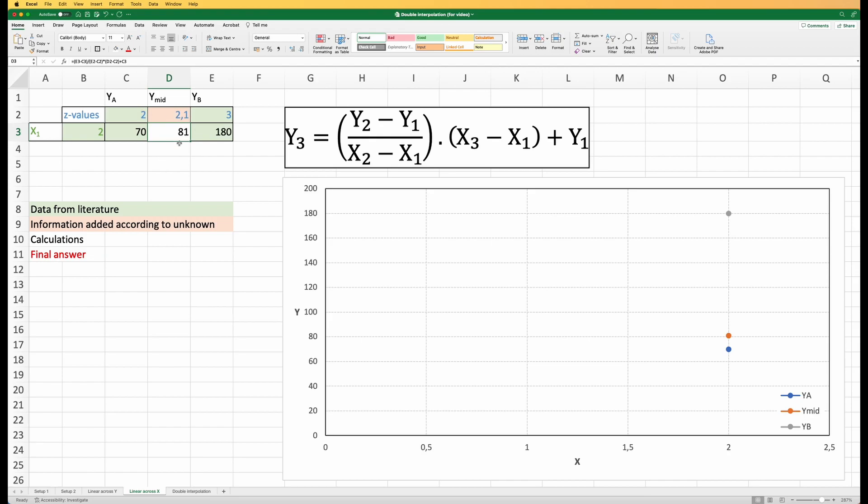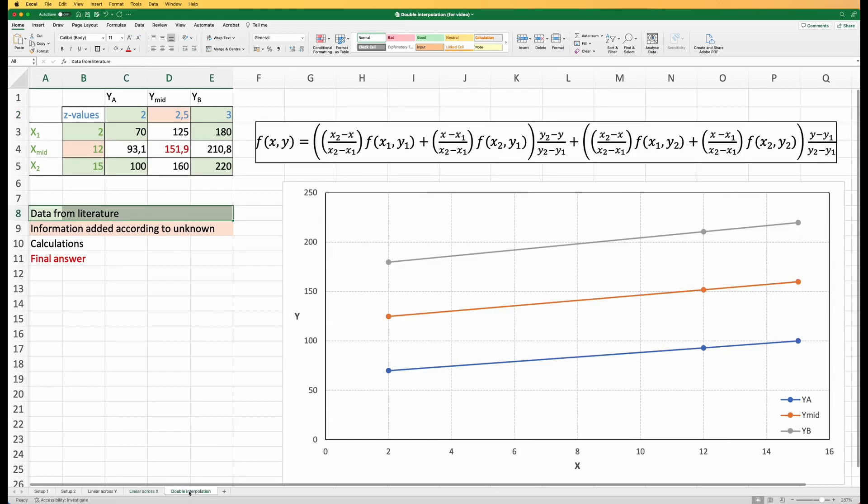The main reason why I wanted to show you the double interpolation was because double interpolation is now what happens if we have a set of x1 and an unknown x, and we have the combination of an unknown mid x value and a mid y value. We're going to jump to a very much more complicated spreadsheet now, or much more complicated formula.